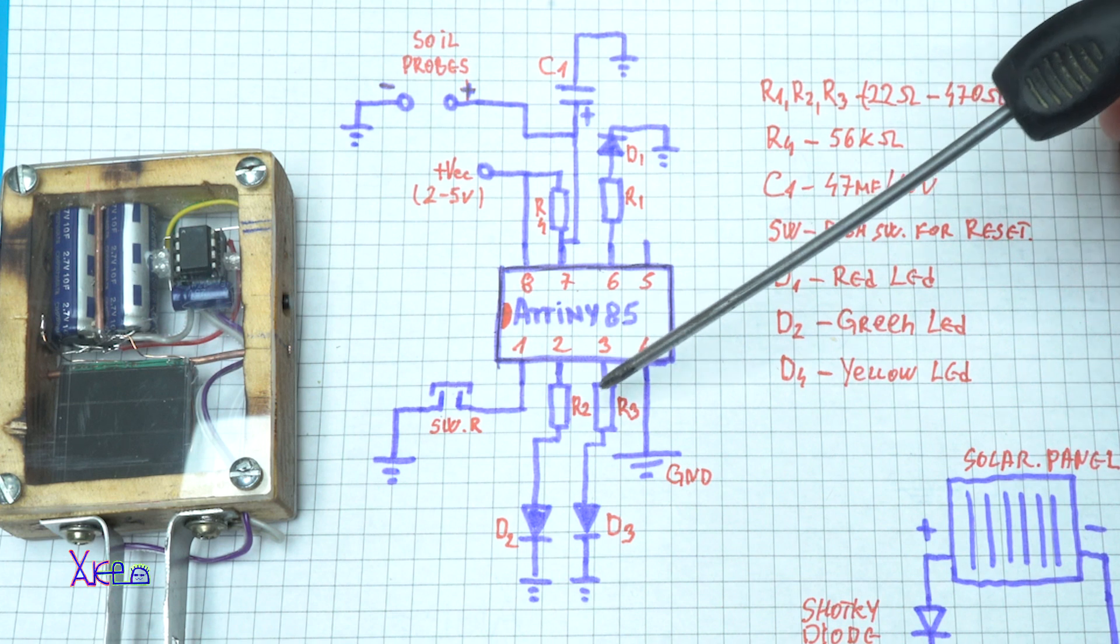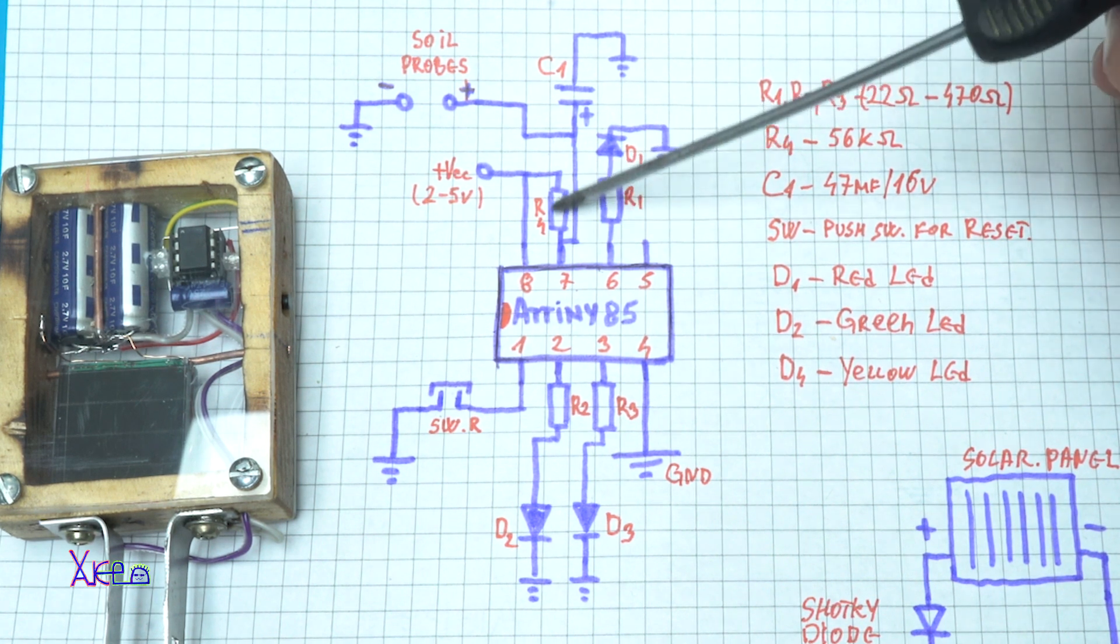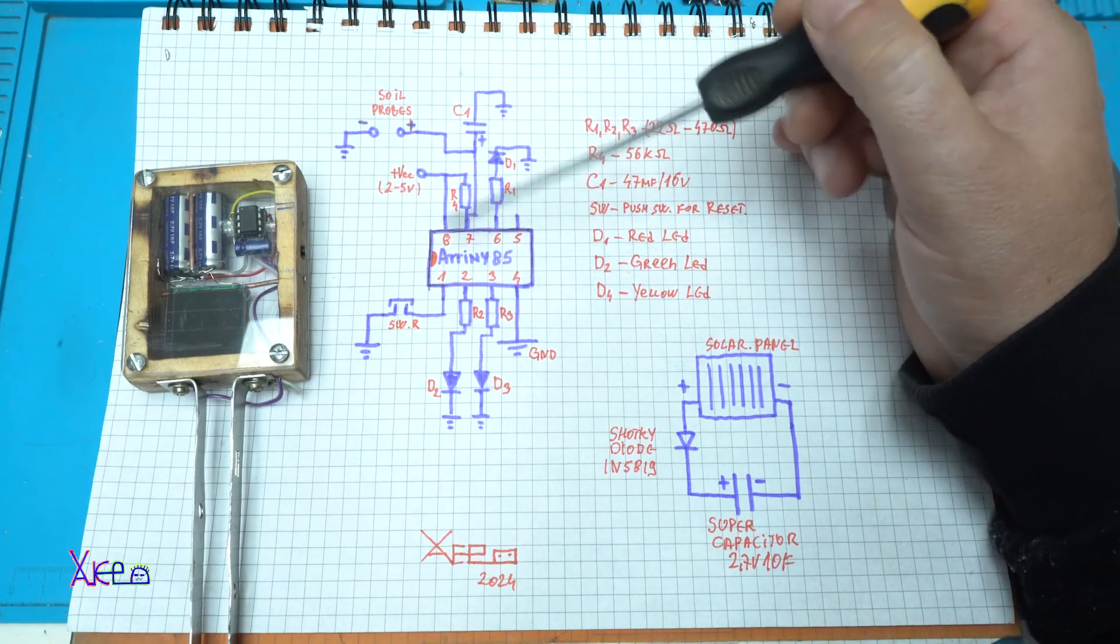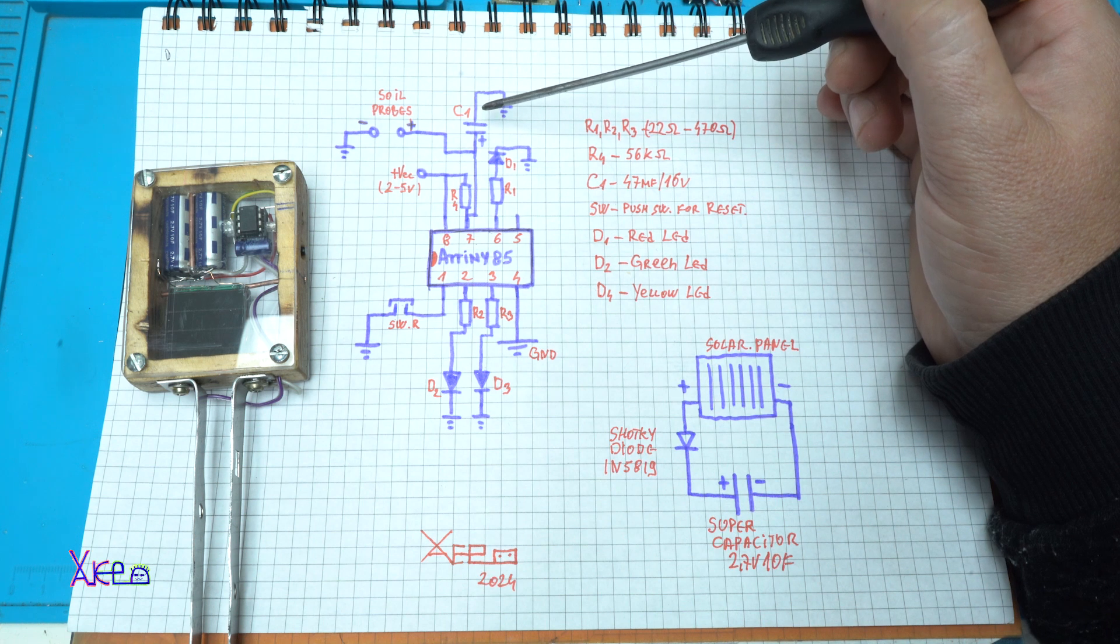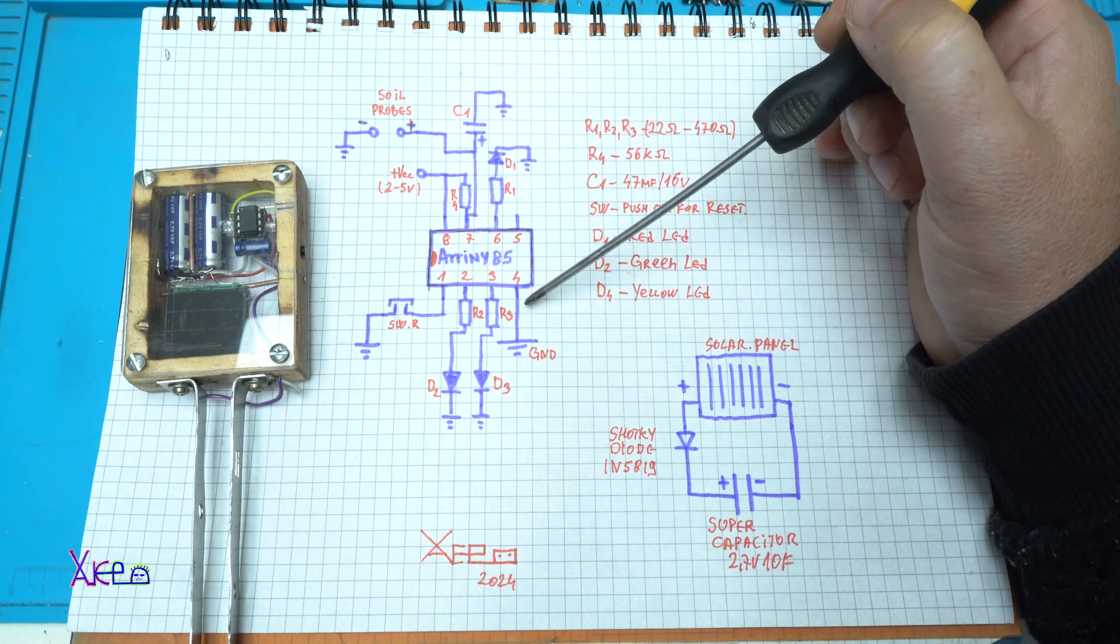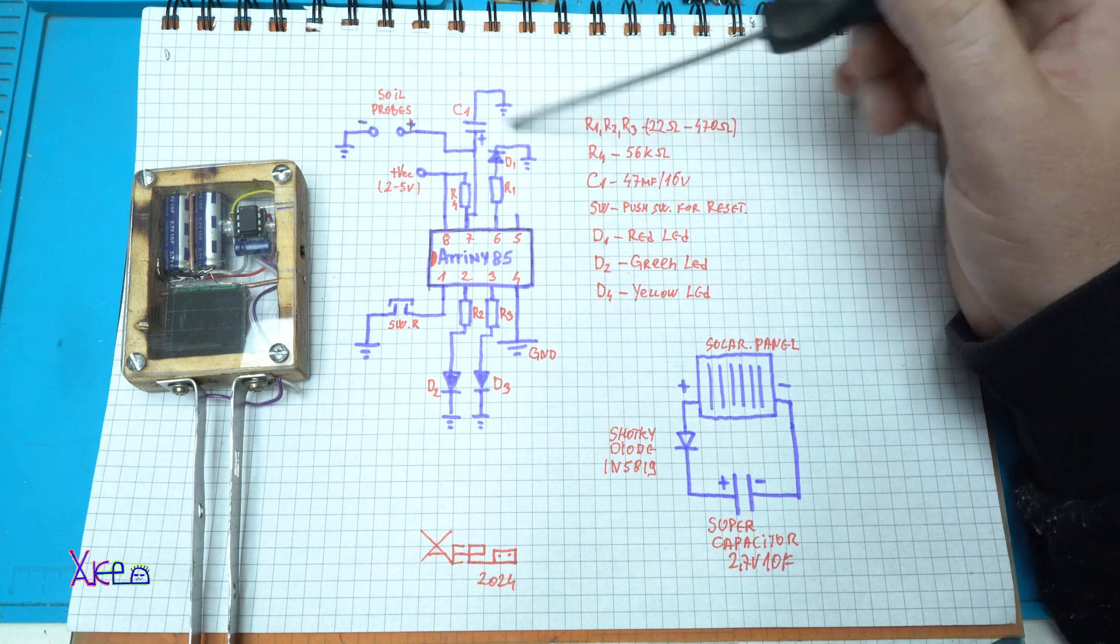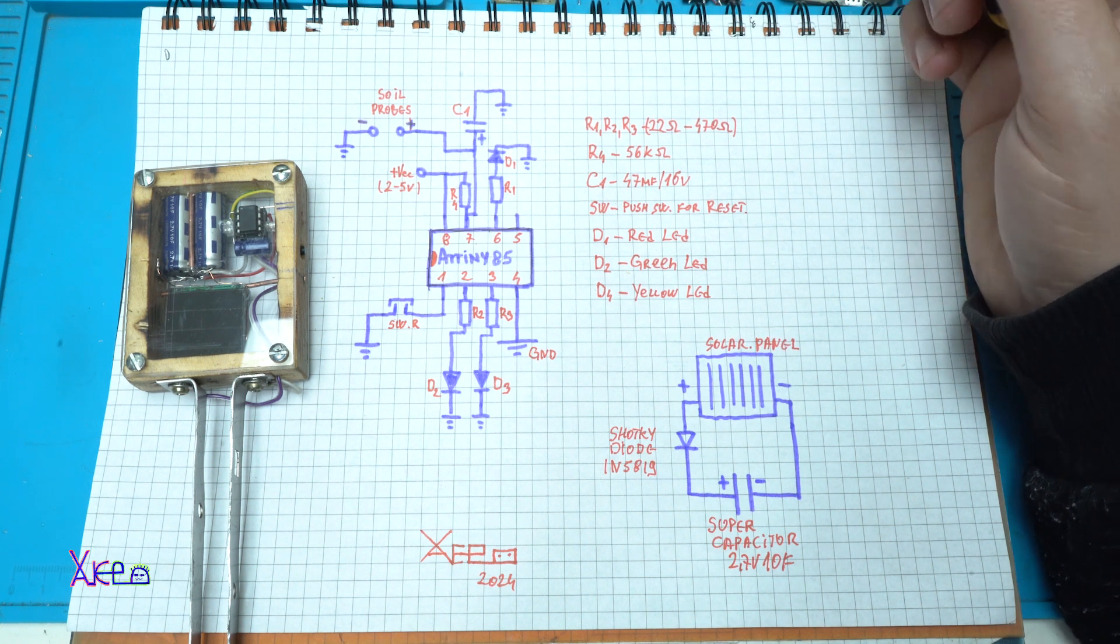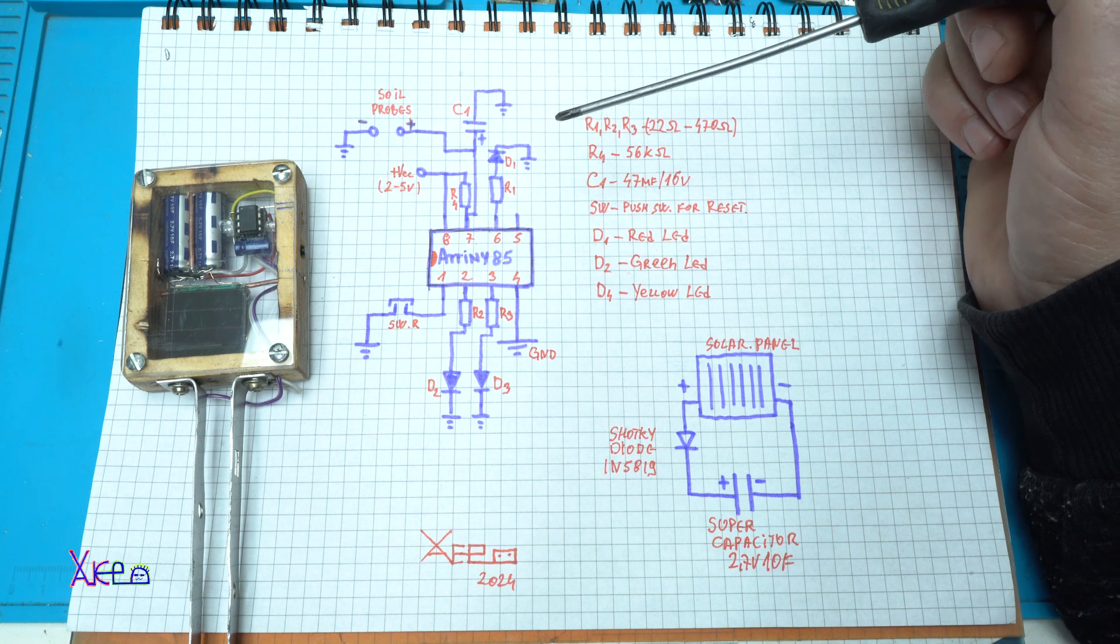I'm using four resistors. Three are for the LEDs and the fourth is for the probe sensor which is 56 kilo-ohm right here. Here we have the push button switch so we can reset the microcontroller. We have only one electrolytic capacitor of 47 microfarads, it's connected right here on pin number 7. And here we have the whole electronic elements used in this circuit, you can see that. Take a screenshot so you can build your own. But remember, this is ATtiny85 microcontroller that needs to be programmed with the code.